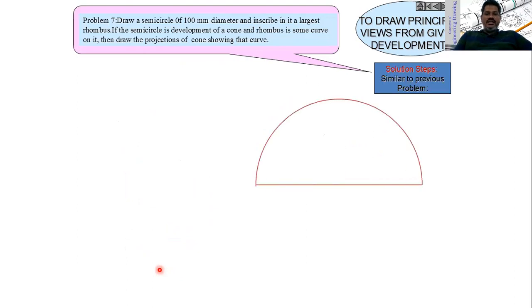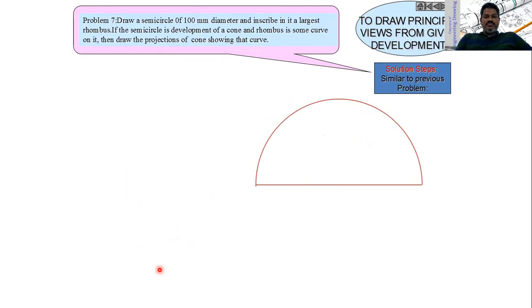Next problem: draw a semicircle of 100 mm diameter and inscribe in it the largest rhombus. If the semicircle is the development of a cone and the rhombus is a curve on it, draw the projections of the cone showing that curve. This is similar to the previous problem but with a rhombus instead of a circle.